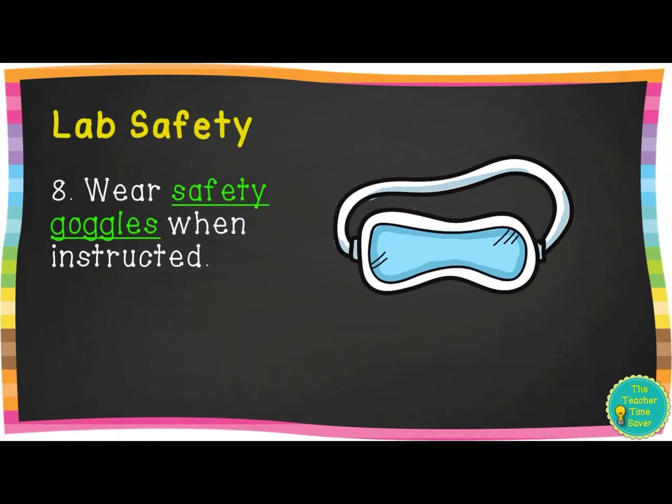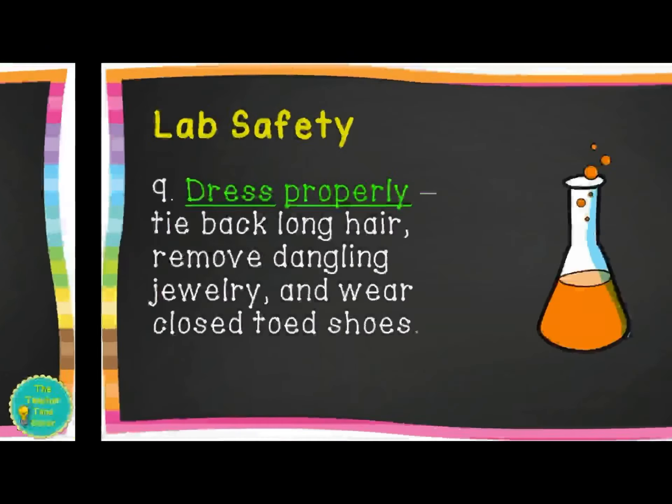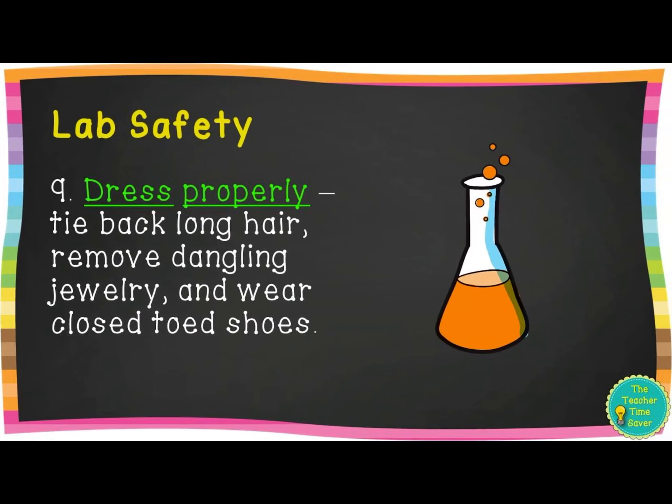Rule eight: wear safety goggles when instructed. We're not going to have safety goggles for this course, but in many future labs you'll have to wear them. Rule nine: dress properly — tie back long hair, remove dangling jewelry, and wear closed-toed shoes. You won't need closed-toed shoes in my lab, but you will need to tie back your long hair and remove dangling jewelry so it doesn't fall into what we're working with.